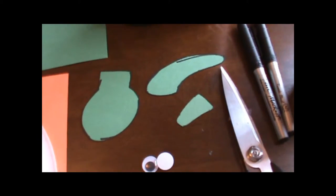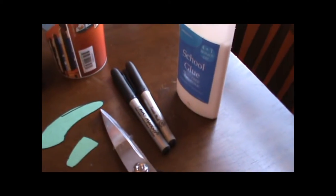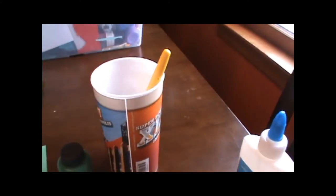For this project you will need a paper plate, a half sheet of green construction paper, the turtle part templates to trace, googly eyes, scissors, white glue, a marker, green paint, and a paint brush.